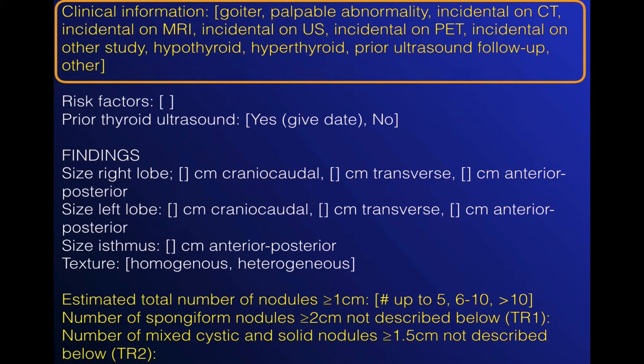The next line is the number of spongiform nodules that are two centimeters or greater but not described below in any detail. These are TIRADS 1 nodules and would otherwise not be recommended for biopsy, but some other risk stratification systems do recommend biopsy at two centimeters or greater. If we didn't report the number of these nodules, we'd be underestimating the reduction in nodule biopsies with ACR-TIRADS. The third line is the number of mixed cystic and solid nodules measuring 1.5 centimeters or greater not described below. These are TIRADS 2 nodules, otherwise not recommended for biopsy or follow-up, but other risk stratification systems do recommend biopsy — so here you don't need to describe them in detail, just give the number that are 1.5 centimeters or greater.